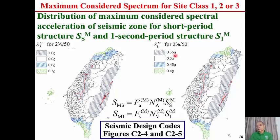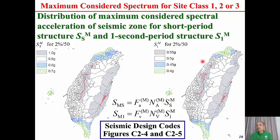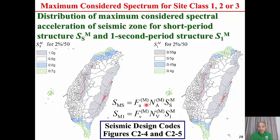Here is the distribution of maximum considered spectral acceleration of seismic zone for short period SSM and for one second period S1M. The maximum value for SSM is 1.0G, in the area close to active faults. The second largest is 0.9G, the third largest is 0.8G in the northern and southern parts of Taiwan, and the smallest is 0.7G at the northernmost and southernmost tips. For S1M, the largest is 0.55G near active faults, then 0.5G, 0.45G, and 0.4G.